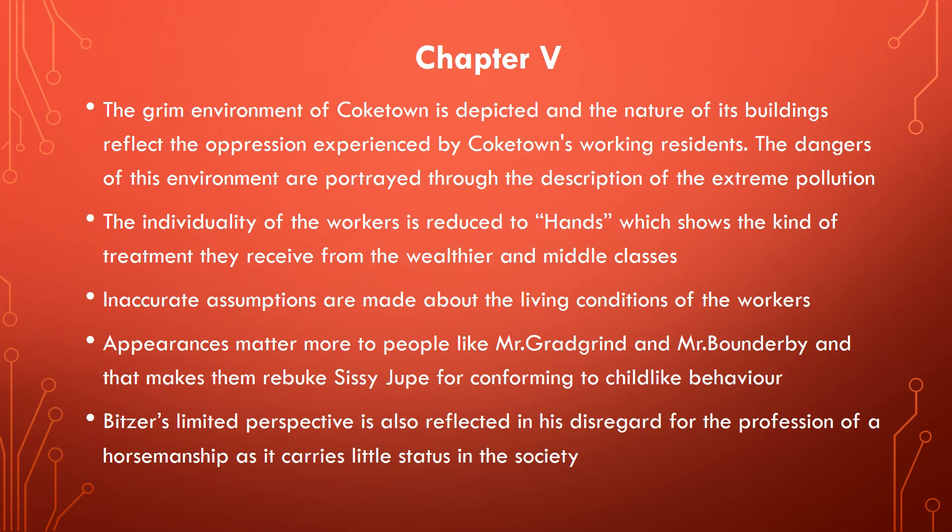Chapter 5 is titled 'The Keynote.' The major point is the introduction of Coketown, with a very detailed description provided. Coketown is built of red brick covered with black ash from factory smokestacks. The city's canal is running black, indicating an extremely polluted area. The river has turned purple due to textile dyes. There are 18 churches, but they are not well attended by the workers.